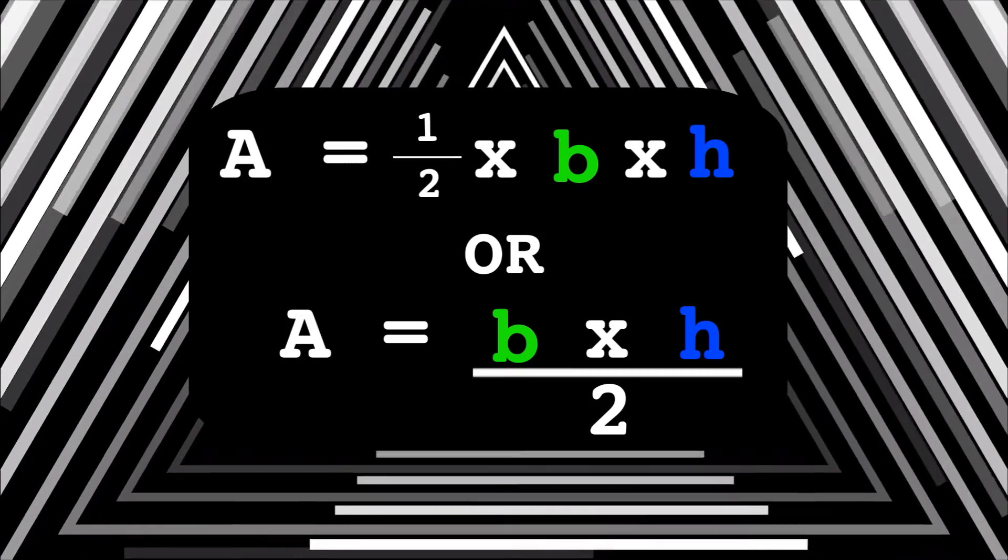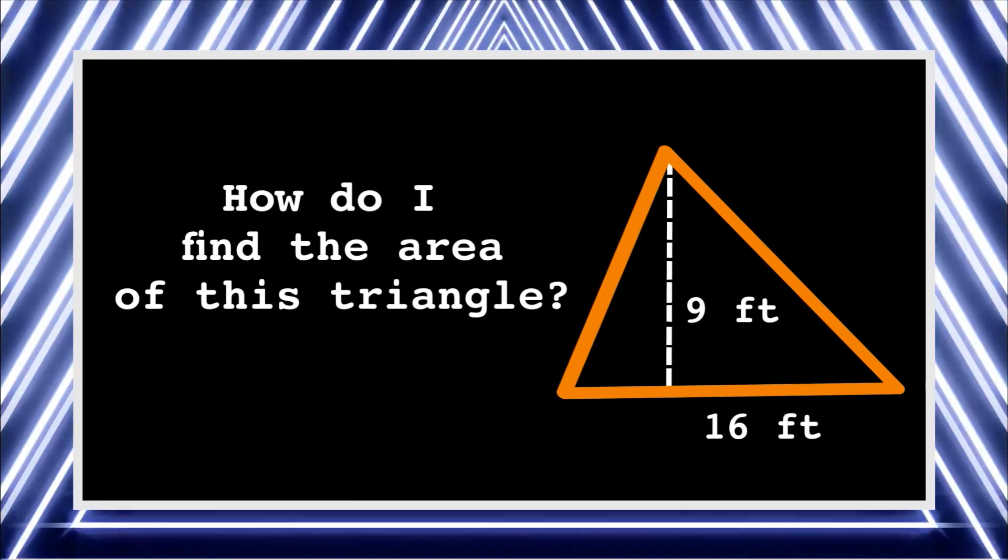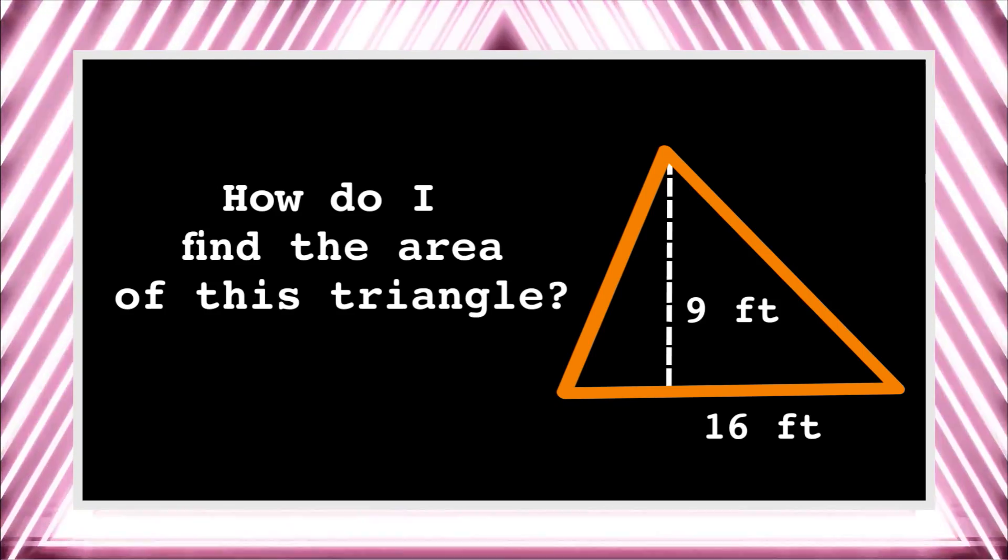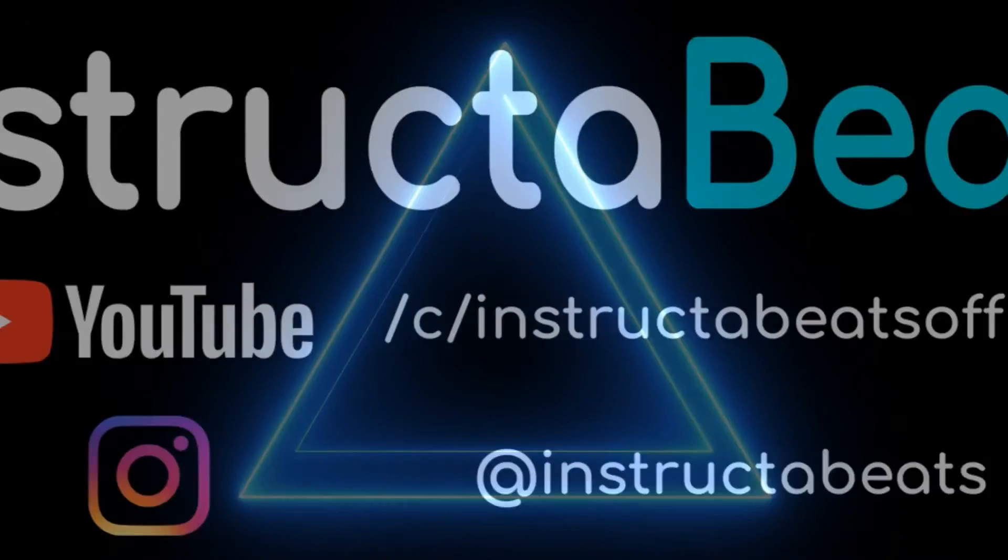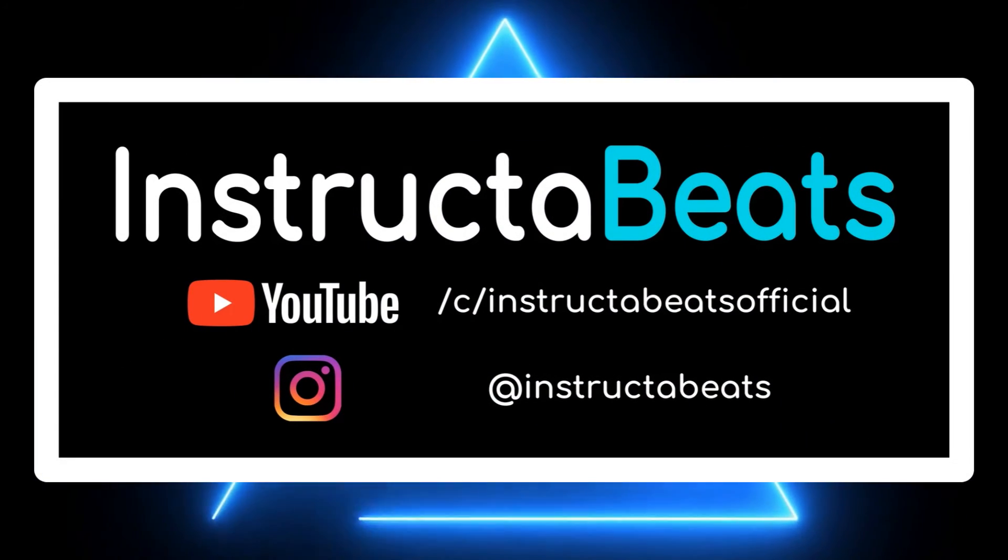Find the area of a triangle: take one half times base times the height. Find the area of a triangle: take one half times base times the height.